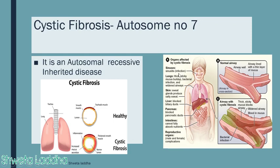Due to the mucus buildup in cystic fibrosis, there are increased chances of sinus infections; the lungs become thick and sticky, leading to bacterial infection. The sweat glands produce salty sweat, the liver and biliary ducts may be blocked, pancreatic ducts are blocked, and the intestines cannot absorb nutrients properly. Reproductive organs in both males and females are also affected. Cystic fibrosis is an autosomal disease caused by gene mutation on autosome number 7.